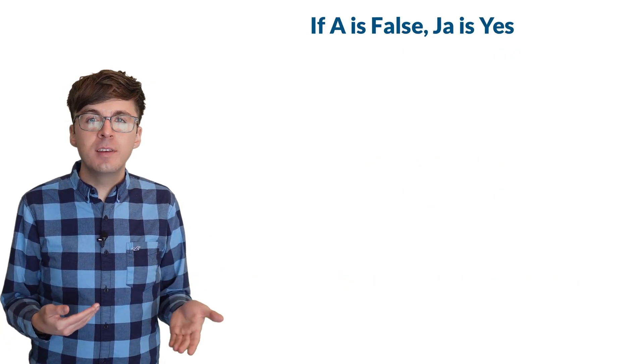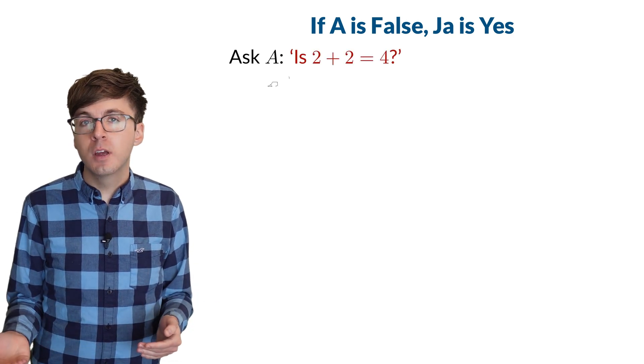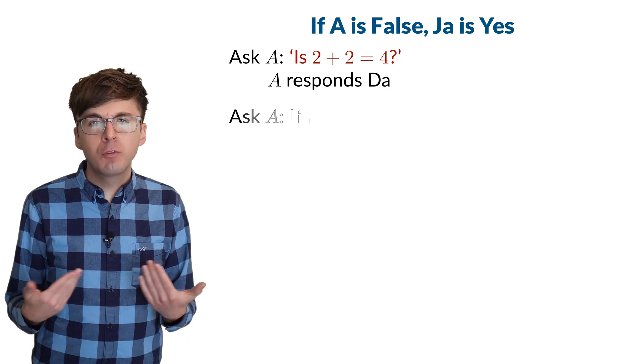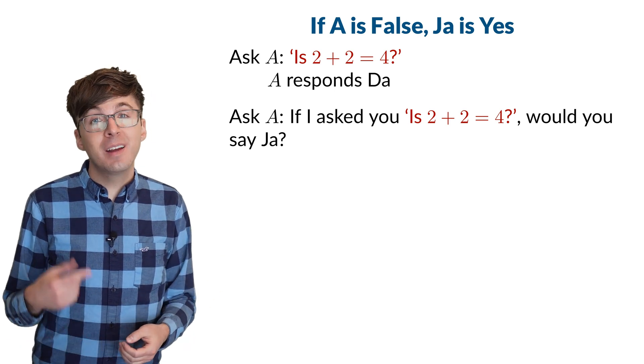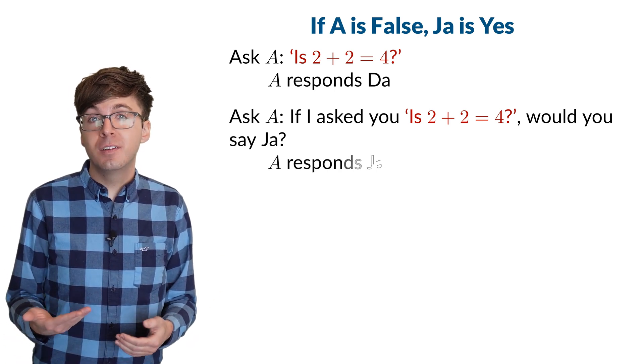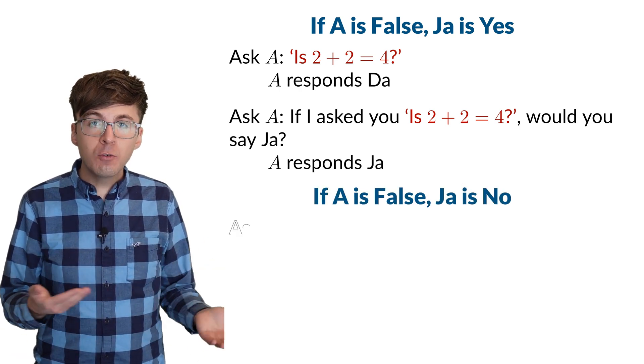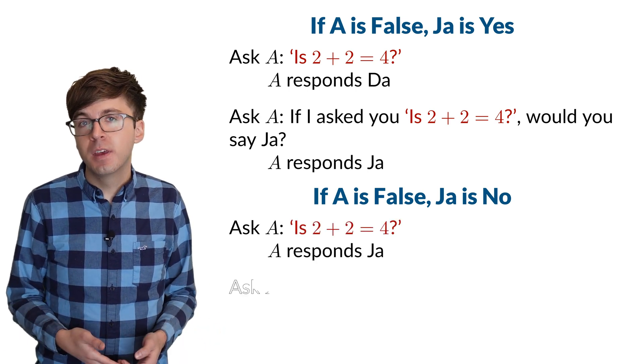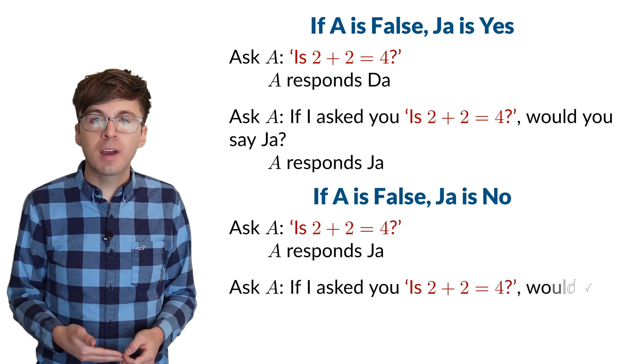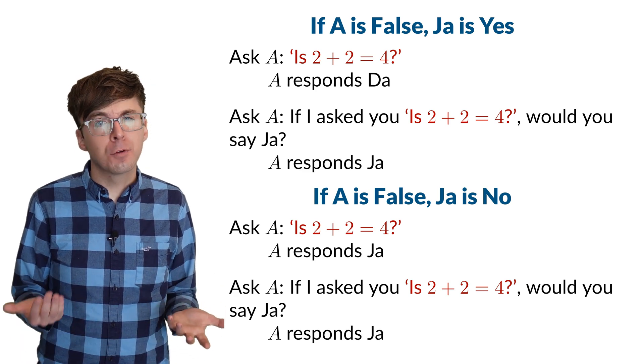Now, what if A is false, so A will lie? If ya means yes, then A's answer to the question, is 2 plus 2 equal to 4, would be no, which is da. So the truthful answer to the counterfactual question is da for no. But since A will lie, A's answer is ya for yes. Lastly, what if ya means no? A's actual answer to is 2 plus 2 equal to 4 would be ya for no. So the truthful answer to our counterfactual is da for yes. But A always lies and will say ya for no.